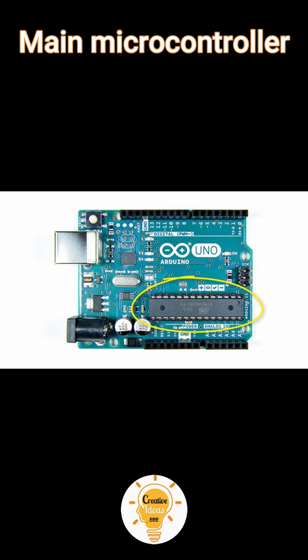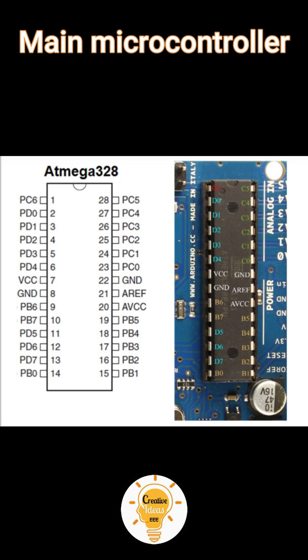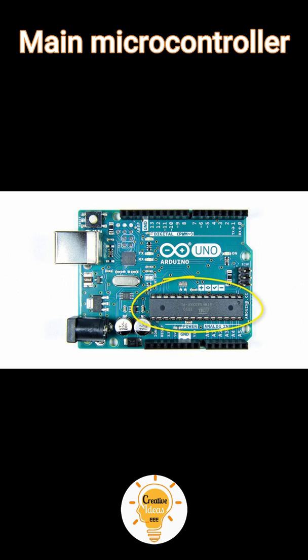Main Microcontroller: Each Arduino board has its own microcontroller — you can think of it as the brain of your board. The main IC on the Arduino is slightly different from board to board. The microcontrollers are usually from the Atmel company. You must know what IC your board has before loading a new program from the Arduino IDE. This information is available on the top of the IC, and for more details you can refer to the datasheet.